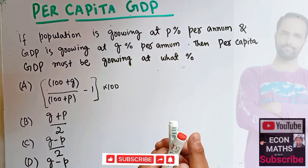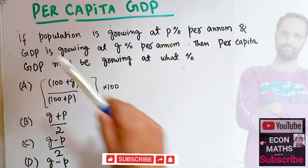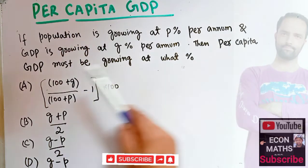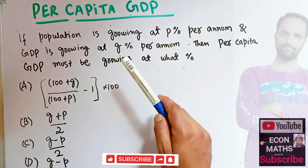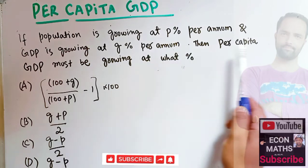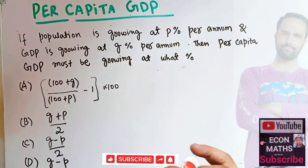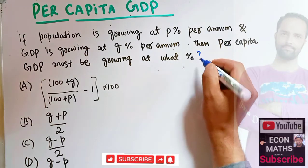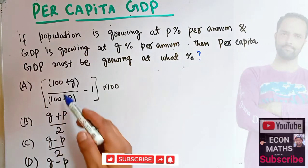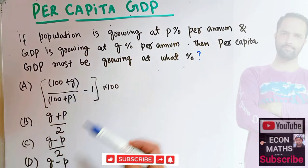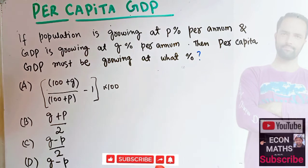In this video we will solve a problem on per capita GDP growth. The question is: if population is growing at P percent per annum and GDP is growing at G percent per annum, then per capita GDP must be growing at what percent? The options are: (100+G)/(100+P) minus 1, (G+P)/2, (G-P)/2, or G minus P.